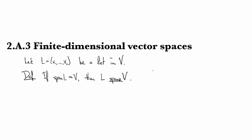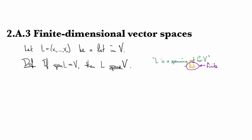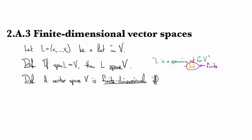You might have heard terminology like L is a spanning set for V, which for the present book we'd have to replace with list, because this author prefers to work with lists. It's also worth noting that whenever the author says list, they mean finite — finite is actually intended to be part of the definition of a list. And that's important for the next definition: a vector space V is finite dimensional if and only if it's spanned by some list.